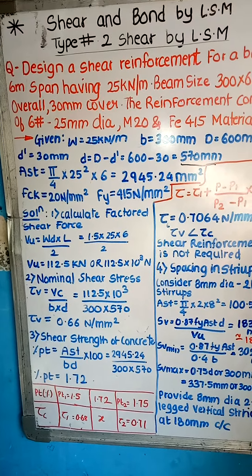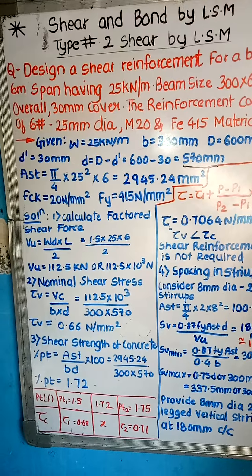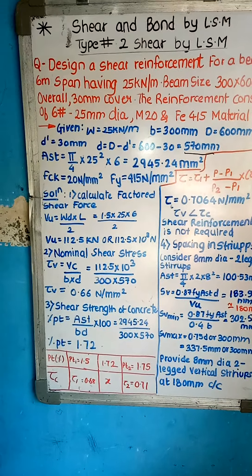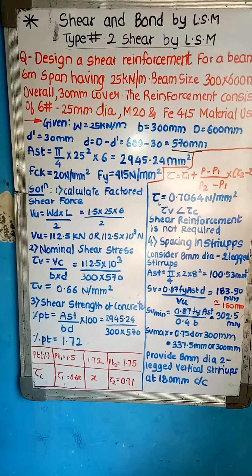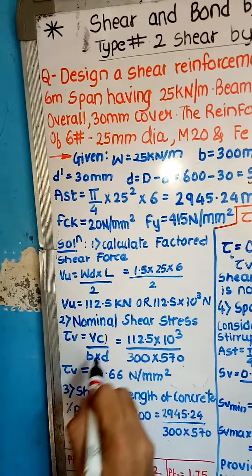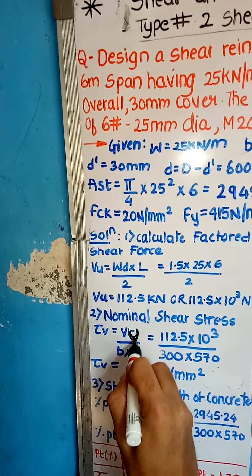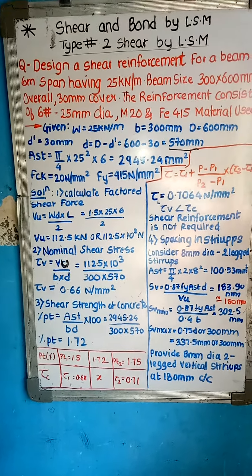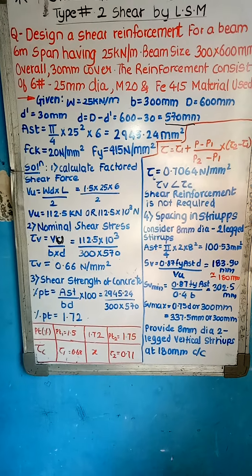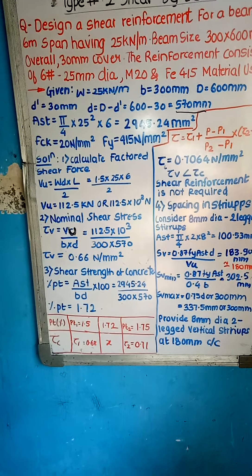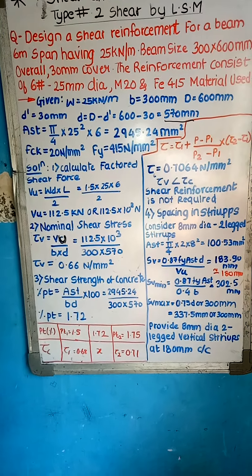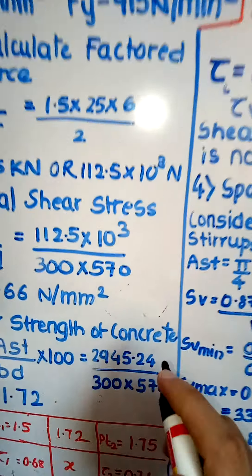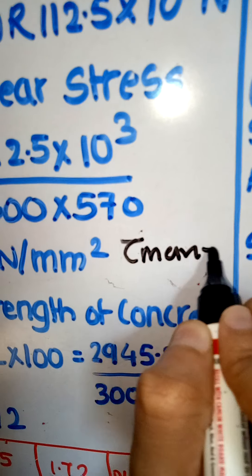So VU is 112.5 kilonewton or 112.5 into 10 raised to 3 newton. Now second step is to calculate nominal shear stress, which is tau V. tau V is equal to VU upon effective area, b into small d. VU is 112.5 into 10 raised to 3 divided by 300 into 570. So tau V is 0.67 newton per mm square.